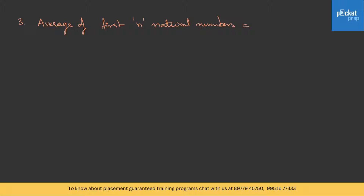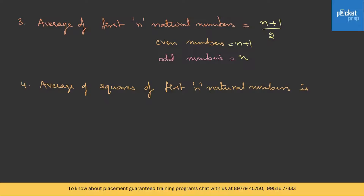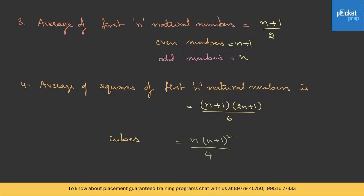Property 3: the average of the first n natural numbers is (n+1)/2. If it is n even numbers, it is n+1, and if it is n odd numbers, it is n. Property 4: the average of squares of first n natural numbers is n(n+1)(2n+1)/6, and for cubes it is n(n+1)²/4. Try to memorize these formulas as questions are sometimes directly based on them.